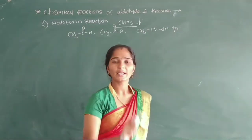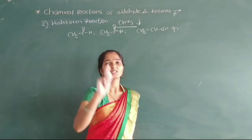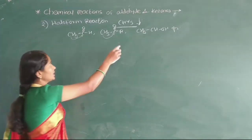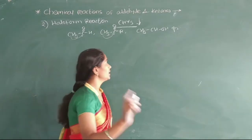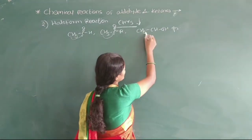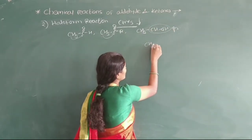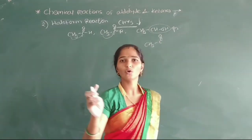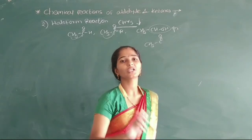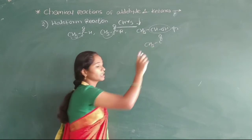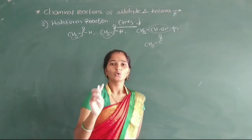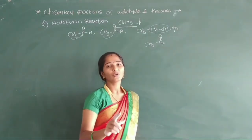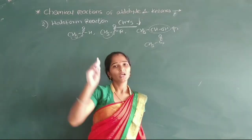This Haloform reaction is carried out in presence of a methyl group (CH₃ group) attached to the carbonyl group. This CH₃ is attached to CO in ketones and also in aldehydes. In alcohol, the CH₃CHOH group: this alcohol is first oxidized to form CH₃COR, and then this CH₃COR carries out the Haloform reaction. That means this Haloform reaction is carried out in ketones where a methyl group is attached to the carbonyl compound. Those compounds having no methyl group attached to the carbonyl group give a negative test for the Haloform reaction.